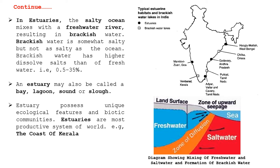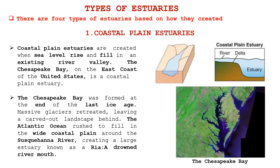An estuary may also be called a bay, a lagoon, a sound, or a slough. Estuaries possess unique ecological features and biotic communities. Estuaries are the most productive systems in the world. For example, the coast of Kerala.